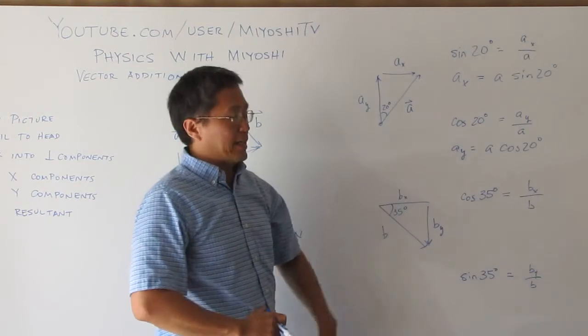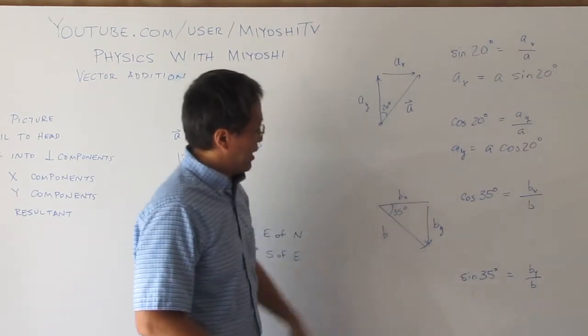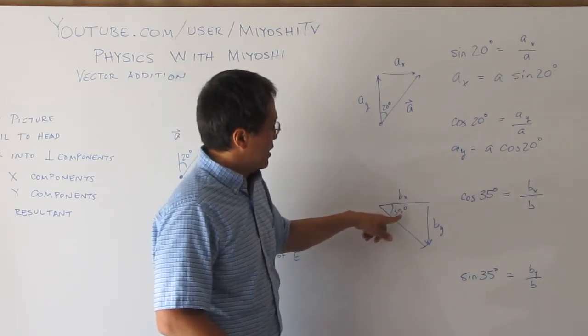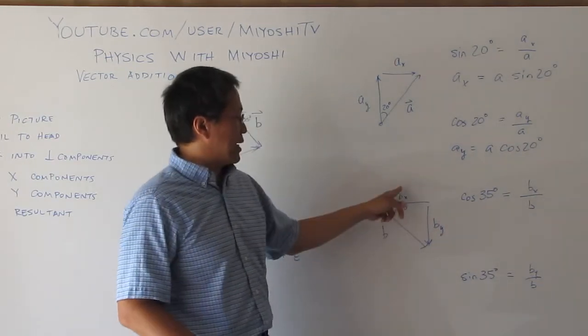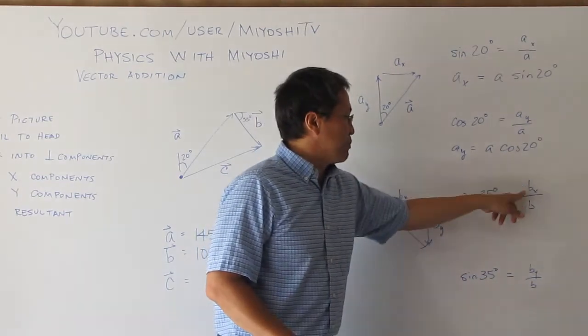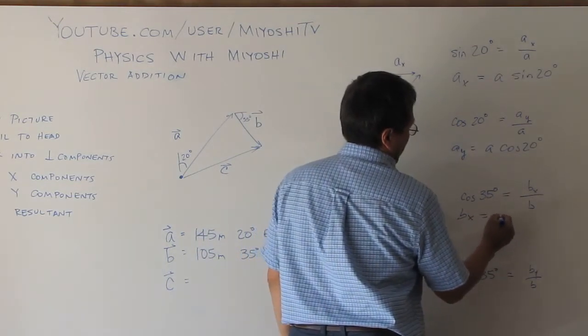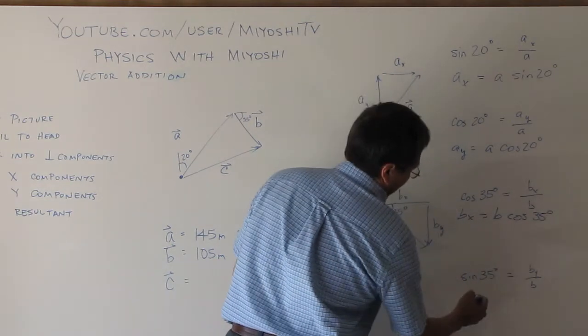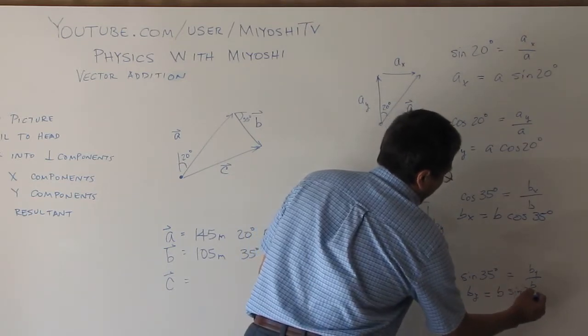Look at the particular vector because the one we have here, I have my 35 here. If I draw my picture, my opposite is my by. And so my sine is by over b. And my adjacent leg is the bx. So in this case, I have my cosine of 35 is bx over b. And so again, if I want to find bx, I'll do bx is b times cosine of 35 degrees. And by is b times sine of 35 degrees.